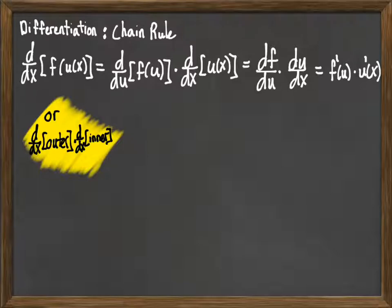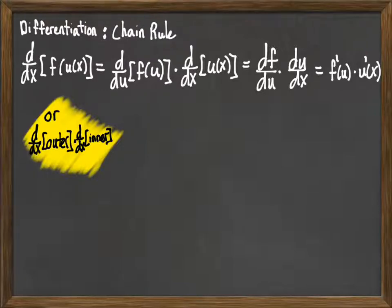And if you have several tiers of that, you go outer — the first outer, then the next outer — then the derivative of what's inside, until you get down to just the derivative of something involving only the variable.